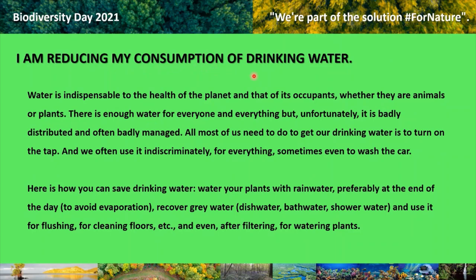Reduce your consumption of drinking water. Water is indispensable to the health of the planet and that of its occupants, whether they are animals or plants. There is enough water for everyone, but unfortunately it is badly distributed and often badly managed. Here is how you can save drinking water: water your plants with rain water, preferably at the end of the day to avoid evaporation. Recover grey water — such as dishwater, bath water, shower water — and use it for flushing, cleaning floors, and even, after filtering, for watering plants.